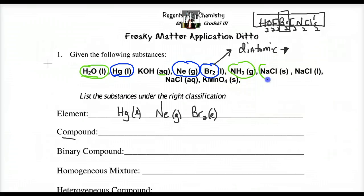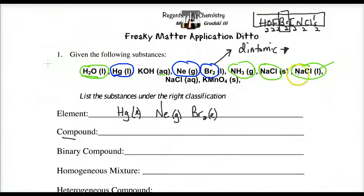Here we have two or more different elements, and that's also a compound — notice the phase is solid. NaCl liquid: some people think liquid means NaCl is mixed with water. No, that's just a solid that has been melted, but still has the same chemical formula. Melting something does not break its chemical structure — it's a physical change. NaCl aqueous is my mixture. And then we have potassium permanganate, KMnO4 — notice three different capital letters, three different elements bonding together in a solid phase.